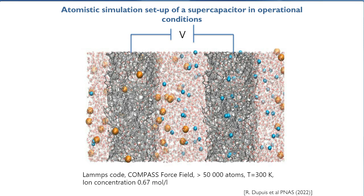This is our simulation setup. We have two porous carbon electrodes shown in grey. In between we have an electrolyte — explicit water molecules and sodium (blue) and chlorine (orange) ions. As a function of voltage, the idea is to describe how those ions get to the outside surface and eventually get into the porosity. The calculation was done with the LAMMPS code using a COMPASS force field, which is not reactive in terms of bond breaking or forming. Carbon positions are frozen, so only water and ions can move. Altogether it's a 50,000-atom simulation at room temperature.